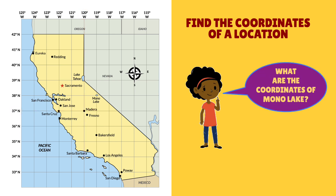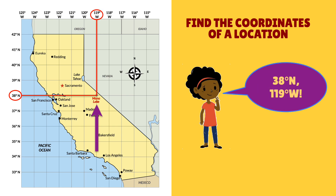Your turn — what are the coordinates of Model Lake? Take a minute to find them and pause the video if you need to. Model Lake is right here. If you got the right coordinates, you found that Model Lake is at 38 degrees north and 119 degrees west. That's it — good job.